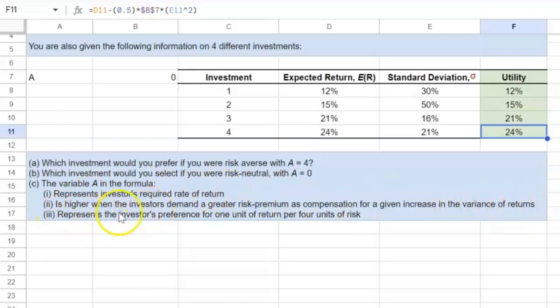Number three asks whether A in the formula represents the investor's preference for one unit of return per four units of risk. No, that's not true because there's no foundation for why it should be per four units of risk. A can take on different values: zero, one, two, three, four, five, whatever. And so this option is neither here nor there.